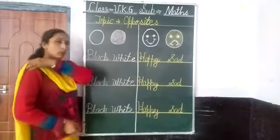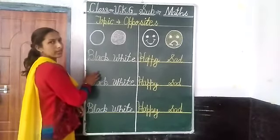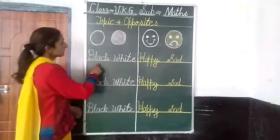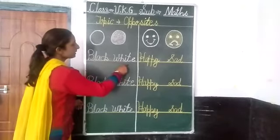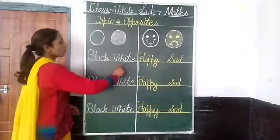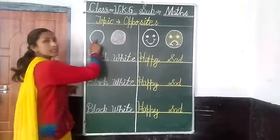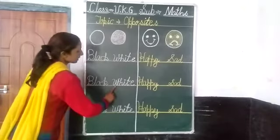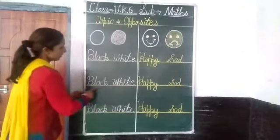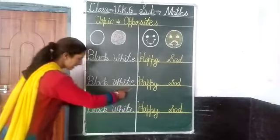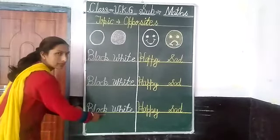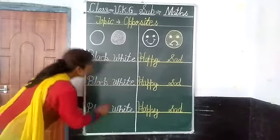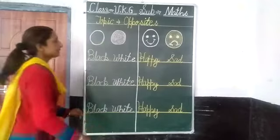So dear children, our new opposite words are here. Black — B-L-A-C-K — and white — W-H-I-T-E. Black ka jo opposite word hai, vo kaun sa hai? White. Black means kala, and white means safed. Again: B-L-A-C-K, black. W-H-I-T-E, white. Black means kala, white means safed. Ab aata hai aapko?